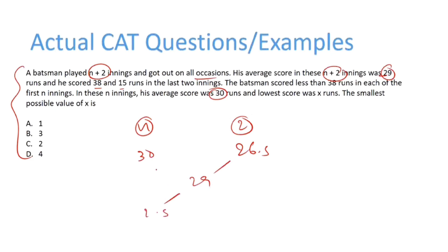So this becomes 2.5 and this becomes 1, which can be simplified to 5:2. Now this 5:2 is same as n:2. Therefore n is equal to 5, or we can say that there were 5 innings before the 2 innings.